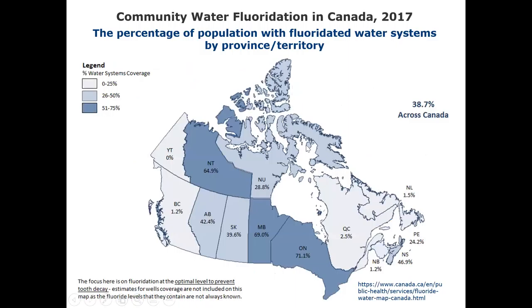Here's a map showing what's going on in Canada in terms of water fluoridation. Alberta is about half fluoridated, which is consistent with many parts of Canada — about 40% across Canada. Quebec is a lot lower, New Brunswick very minimal, and other Maritime provinces a little higher. Just thought I'd show you that — it's kind of interesting.